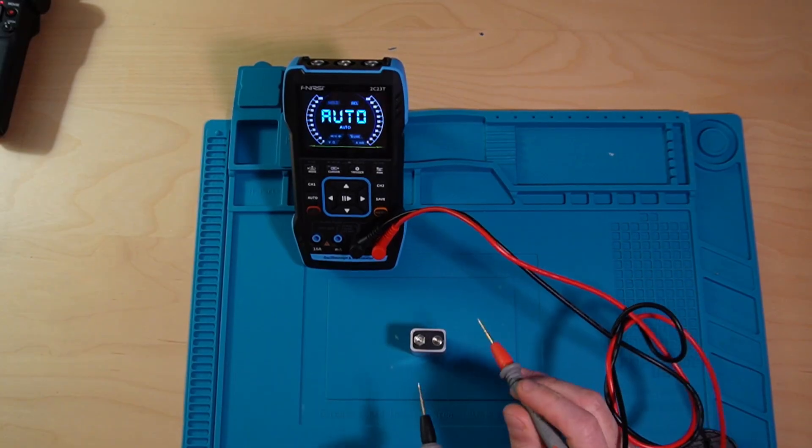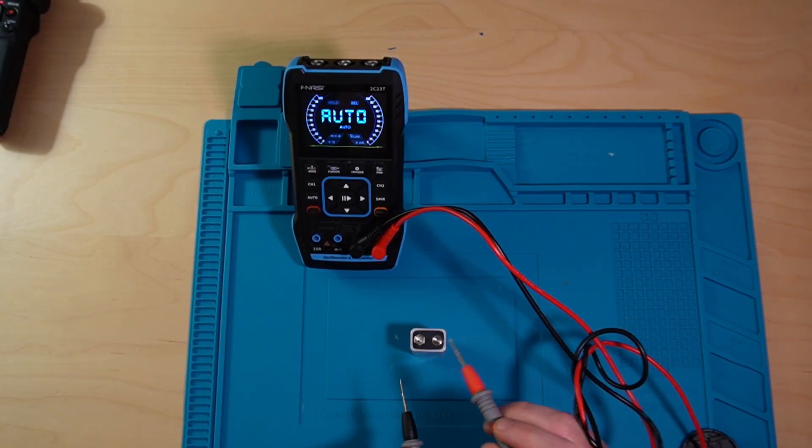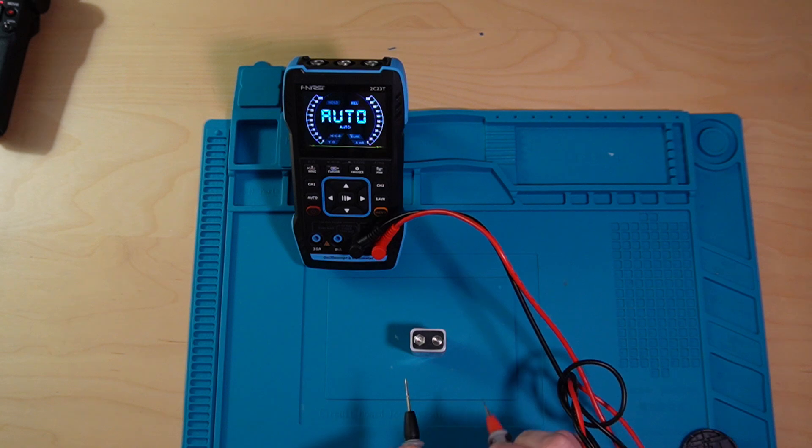Okay, so for 9-volt batteries, the big terminal is your negative, and the small terminal is your positive.